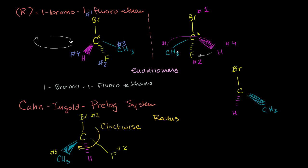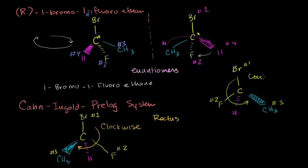And then this fluorine is going to be moved where the methyl group was. So this fluorine will go right here. And now, using the Cahn-Ingold-Prelog system, this is our number one, this is our number two — just by atomic number — this is number three. You go from number one through number two to number three — you're going counterclockwise.